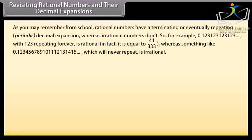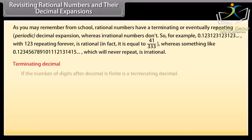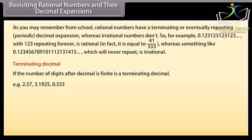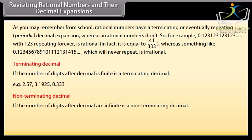Revisiting rational numbers and their decimal expansions. Rational numbers have a terminating or eventually repeating (periodic) decimal expansion, whereas irrational numbers don't. For example, 0.123123123... with 123 repeating forever is rational; in fact it equals 41/333. Whereas something like 0.123456789101112131415... which will never repeat, is irrational. A terminating decimal has a finite number of digits after the decimal point (e.g., 2.57, 3.1925, 0.333). A non-terminating decimal has an infinite number of digits after the decimal point.